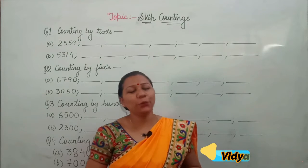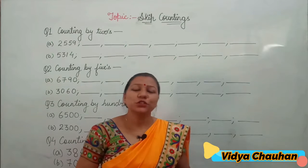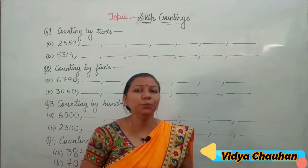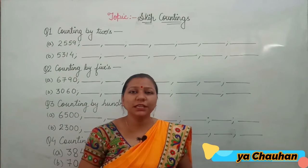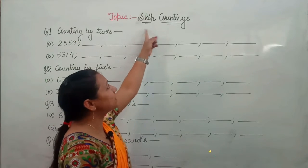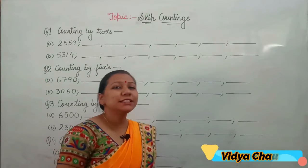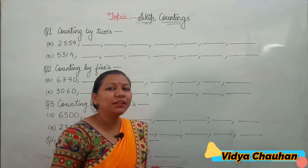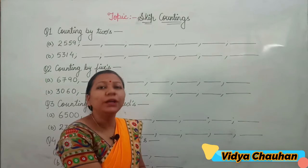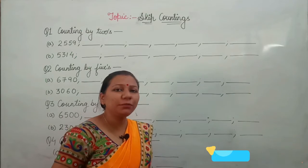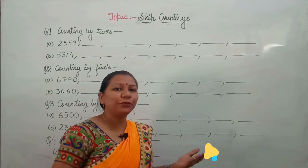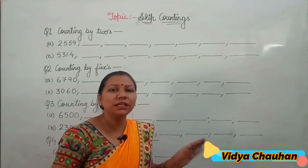Hello dear children, how are you all? Today we are going to discuss a very different and very important topic from the same chapter: numbers and numeration. Today's topic is skip counting. Skip counting basically means the word 'skip' means you have to leave something and jump to the next value. Skip counting can be done in different manners: by twos, threes, fours, fives, tens, hundreds, thousands, ten thousands.